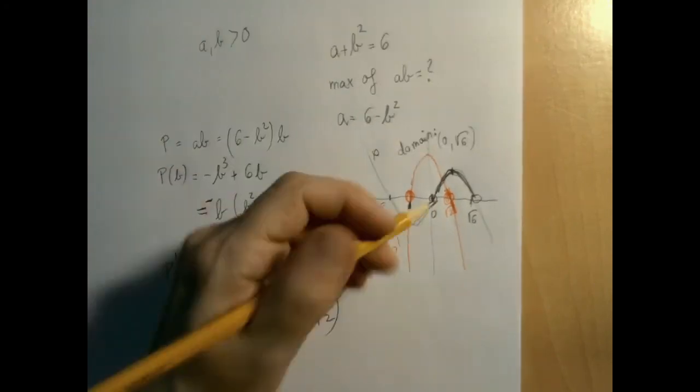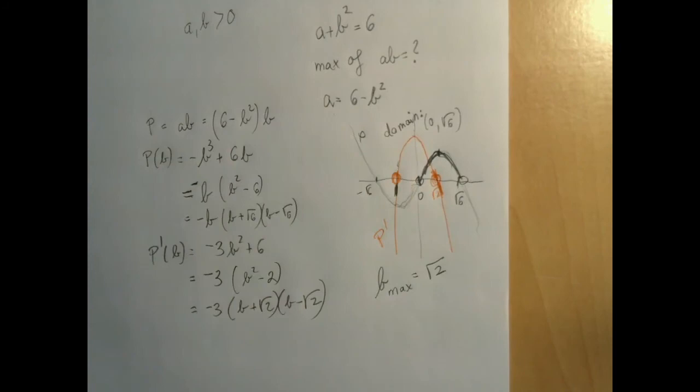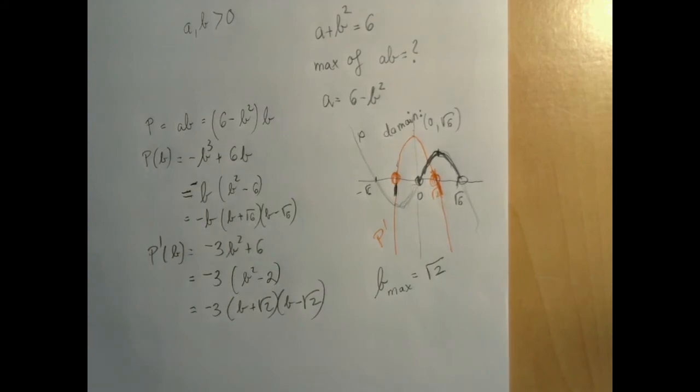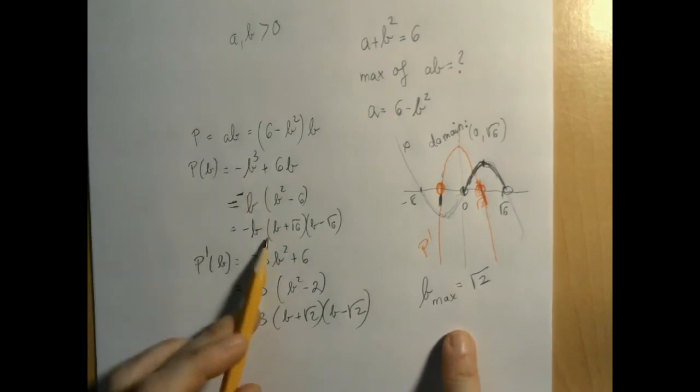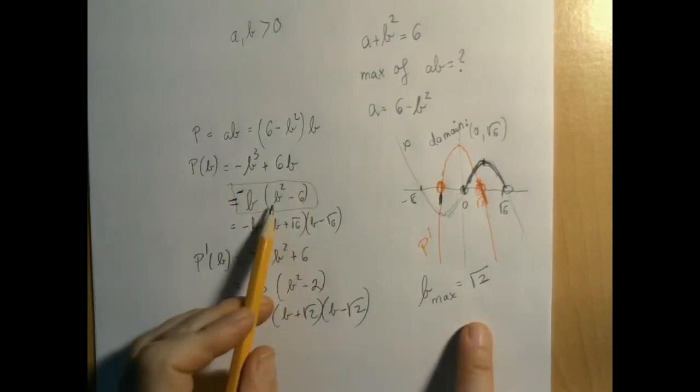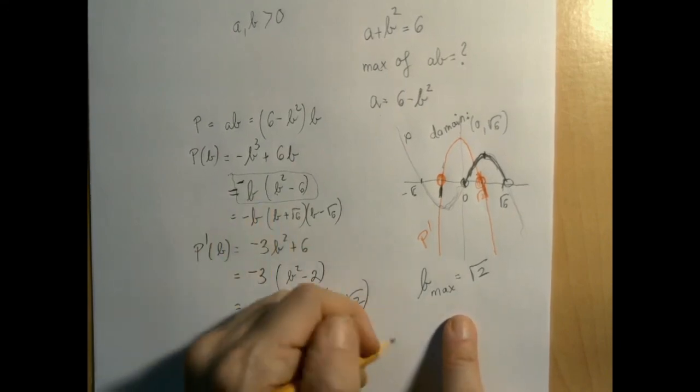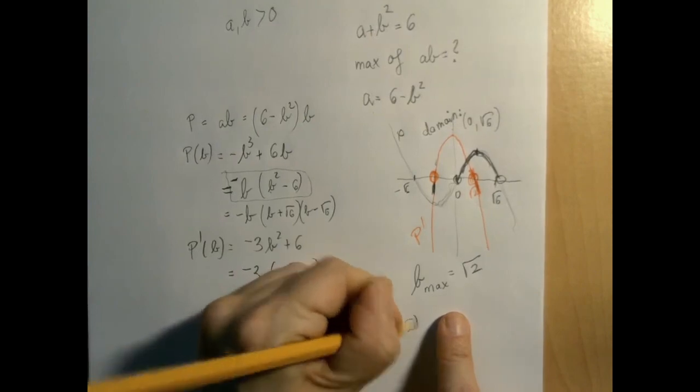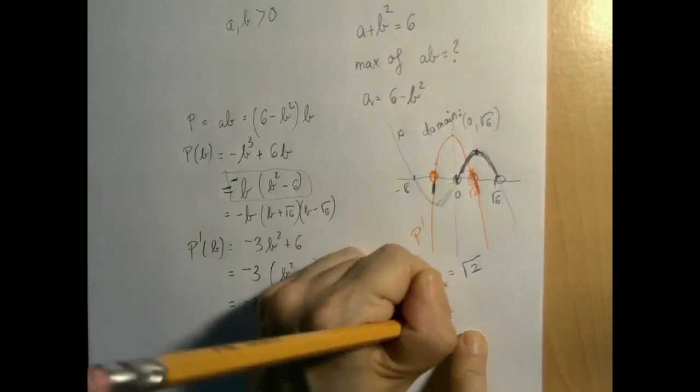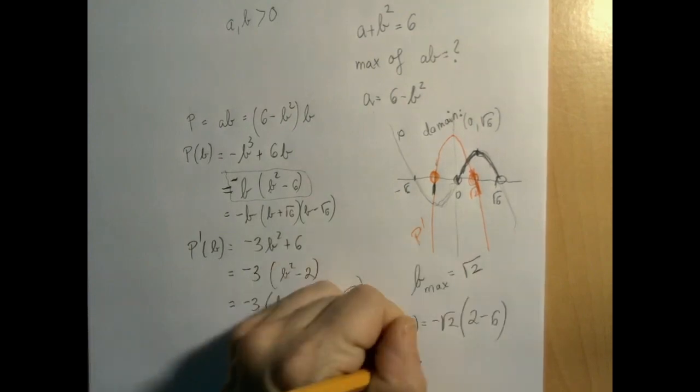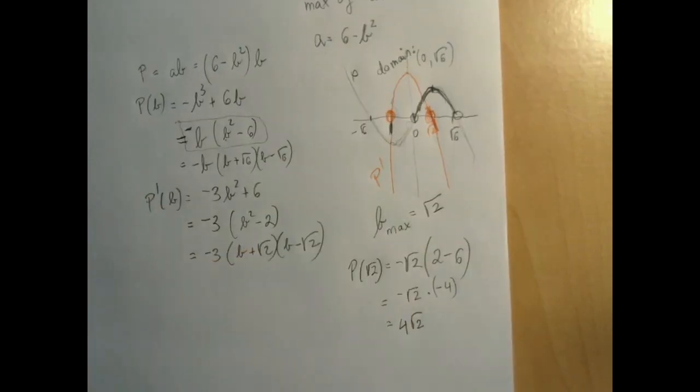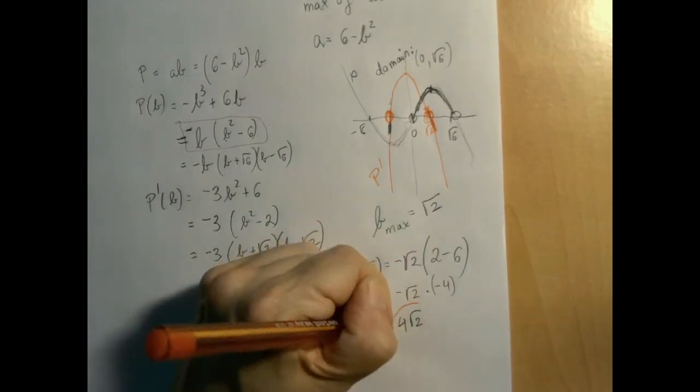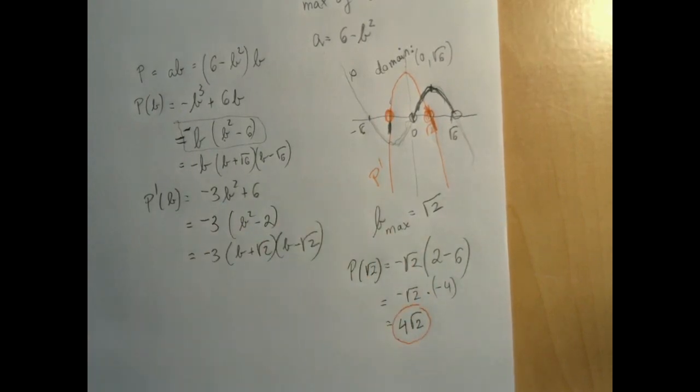So we think that the maximum is at B equals square root of 2. Now that we feel we know everything, we should read the problem again because sometimes they ask for weird stuff. For example, now we're not asking for the two numbers, but asking for that maximum value of the product. For that, we already have expressions for the product. I like this one because of B squared there. So the product function evaluated at square root of 2 is negative square root of 2 times B squared, that's just 2, minus 6. And so we get negative square root of 2 times negative 4. That's always a good sign when we get a positive product of 2 positive numbers. The greatest possible value in this product is 4 times radical 2.